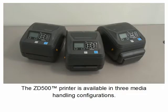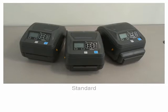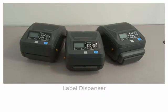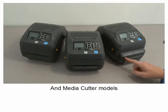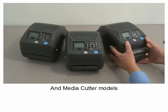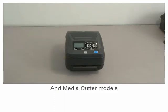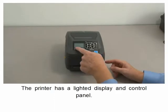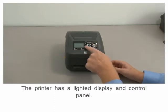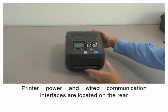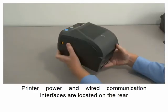The ZD500 printer is available in three media handling configurations: standard, label dispenser, and media cutter models. The printer has a lighted display and control panel, printer power, and wired communication interfaces.